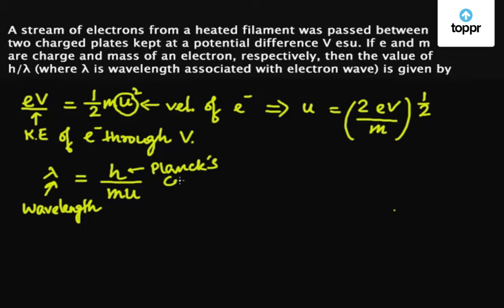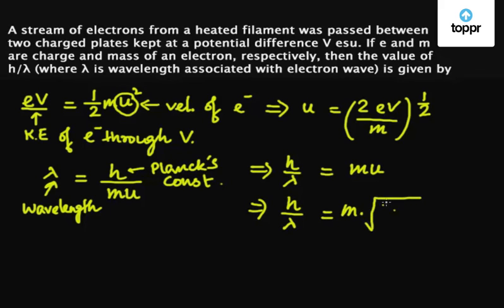This implies h/λ equals mu. Now we substitute the value of u from this equation, u = √(2eV/m), to get h/λ = m × √(2eV/m), which equals √(2meV).